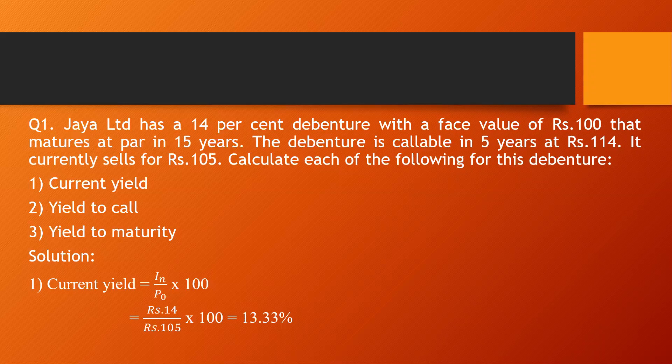The next category is yield to maturity and yield to call. Yield to maturity is the return if the investor had held the bond till the maturity date. Yield to call is the return that the investor would get if they redeemed the callable bonds after holding it for a fixed period of time. In the case of callable bonds, the investor has the option to redeem the bonds at an earlier date than the maturity date.